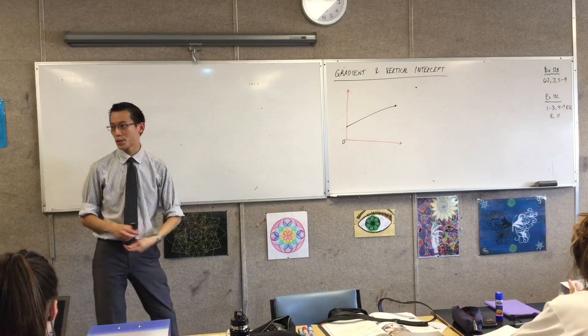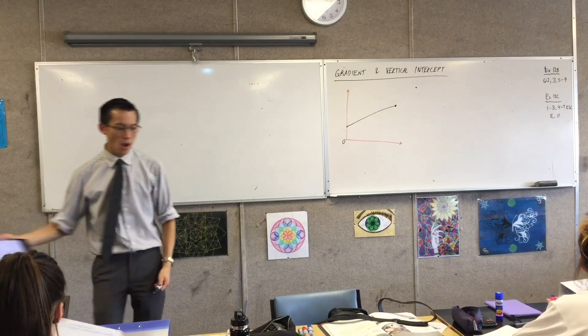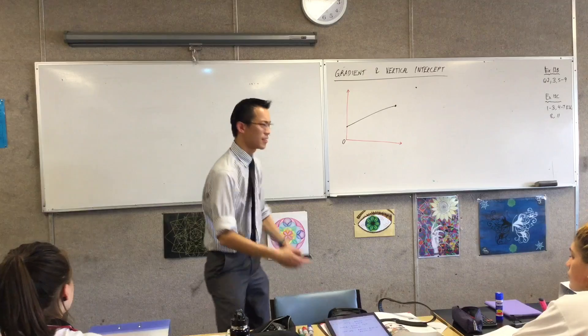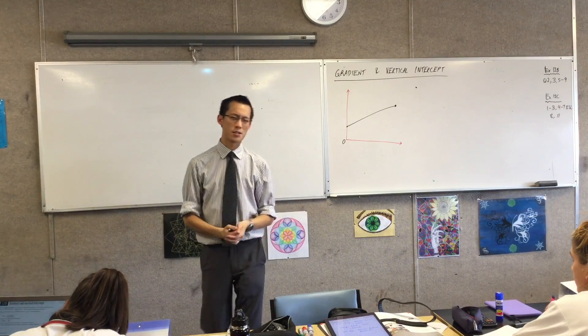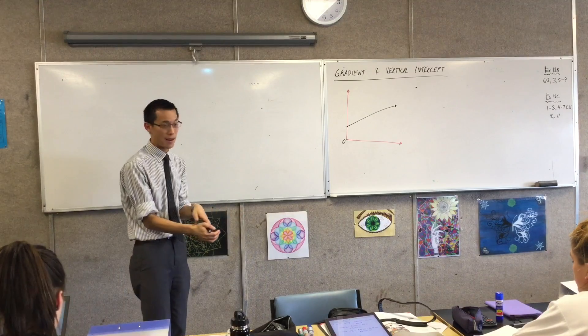When we talk about gradient and vertical intercept, we are trying to understand the features of a line. I can plot this and draw it, that's nice, but I want to know about its features. Understanding its features will tell me a lot more about it.